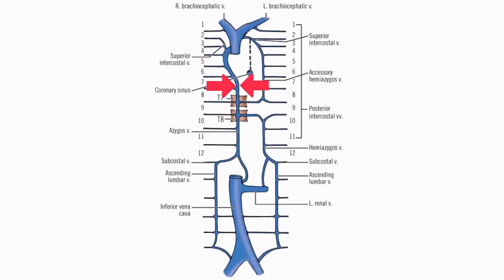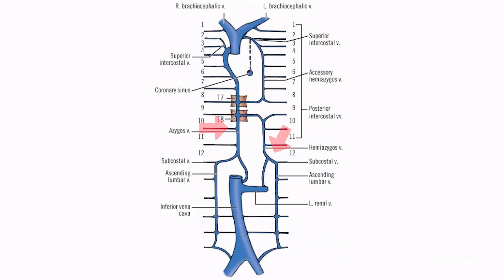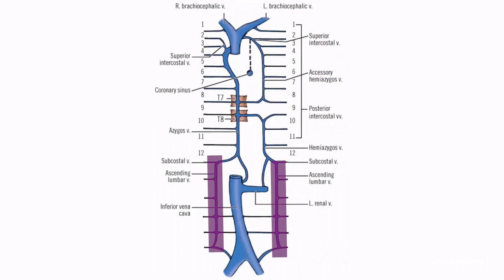A veia ázigos forma uma via colateral entre a veia cava superior e a veia cava inferior e drena sangue das paredes posteriores do tórax e do abdômen. A veia ázigos e a sua principal tributária, a veia hemiázigos, geralmente têm origem em vasos oriundos da face posterior da veia cava inferior e/ou da veia renal, que se fundem com as veias lombares ascendentes e subcostais.